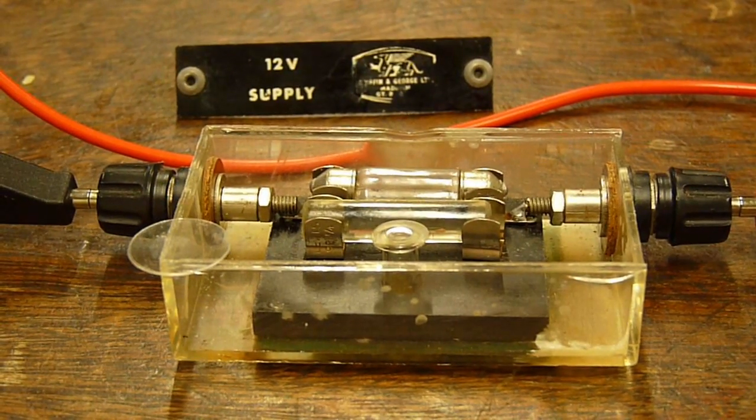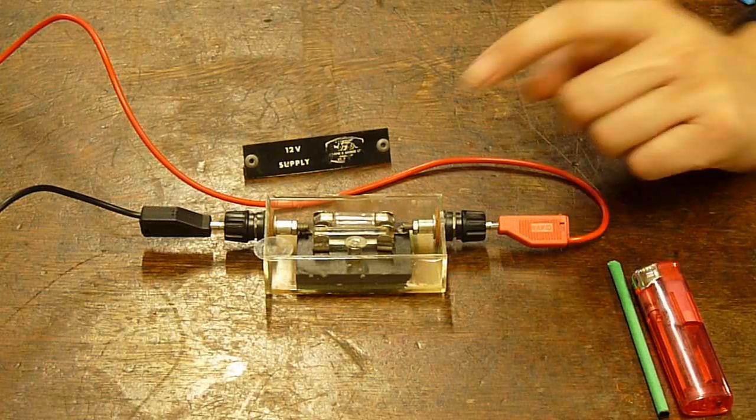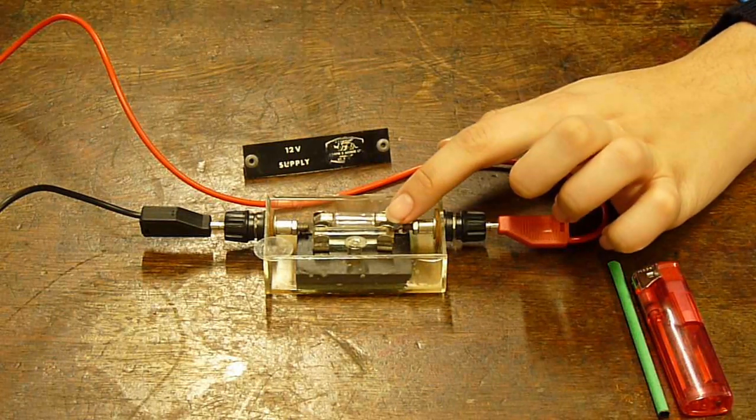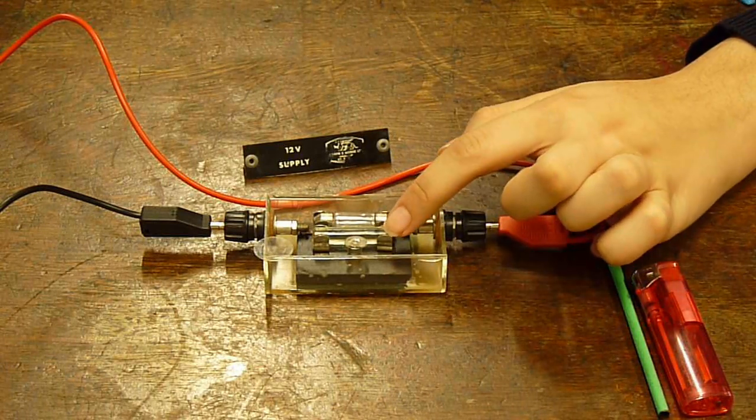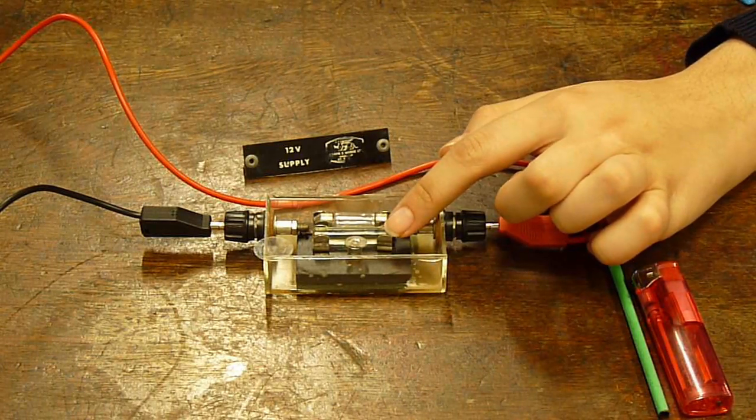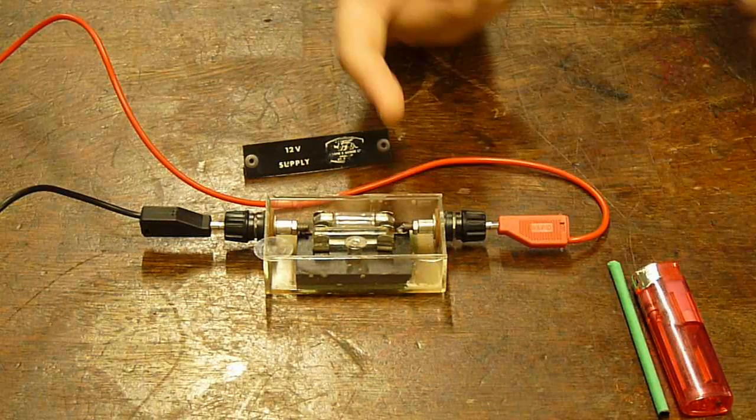Now I'm going to show you how to set up a smoke cell. This is the bulb. This is the glass rod acting as a lens focusing the light horizontally through the smoke chamber.